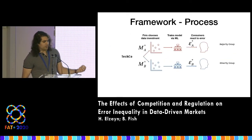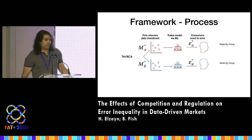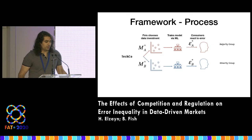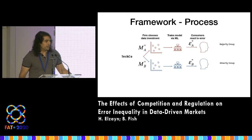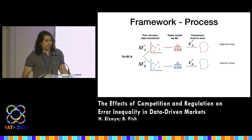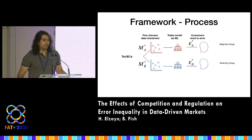In terms of the actual process: the firm has access to two sources of IID data, one for each group. It chooses how much data to buy for each group — it has an unbounded budget, so it could buy as much as it wants. Then consumers react to the worst-case error rates for the models that the firms train.